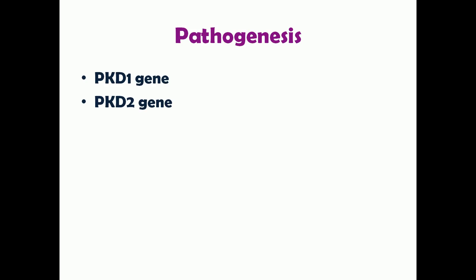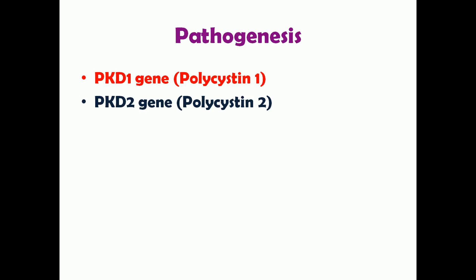It is inherited by an autosomal dominant mode of inheritance. The pathogenesis involves two main genes: PKD1 and PKD2 — easy to remember as PKD stands for polycystic kidney disease. The PKD1 gene encodes a protein known as polycystin-1, and PKD2 encodes polycystin-2. Both mutations invariably lead to renal failure, but the most severe form occurs when PKD1 is mutated, causing renal failure at a very early age.